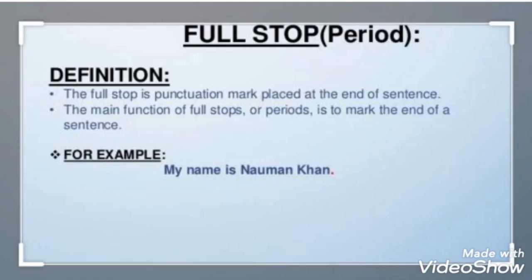Full stop: The full stop is a punctuation mark placed at the end of the sentence. The main function of the full stop, or period, is to mark the end of the sentence. For example, 'My name is Noman Khan.'